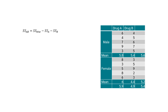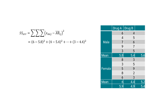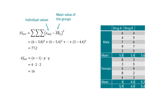Now we can calculate the sum of squares for the interaction. We obtain this by calculating the sum of squares between groups minus the sum of squares of A and B. The degrees of freedom result in 1, and for the interaction we get a variance of 1.8. Finally, we calculate the sum of squares of the error by subtracting the mean value of each group from the respective group values: subtracting 5.8 from group one, 5.4 from group two, 6 from group three, and 4.4 from group four. This gives a sum of squares of 77.2, with degrees of freedom of 16 and a variance of 4.83.